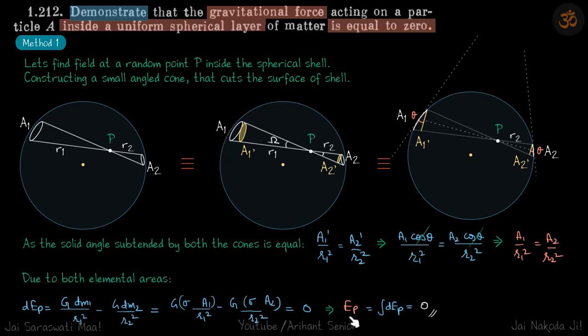Let's not jump ahead. This means that elemental electric field at point P because of these two areas is zero.